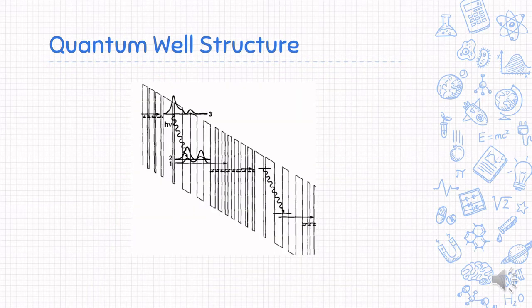The quantum cascade laser has a structure separated into two regions, injector region and the active region, alternating with each other.